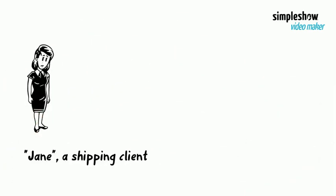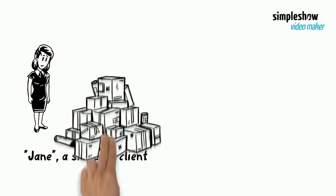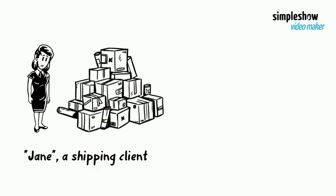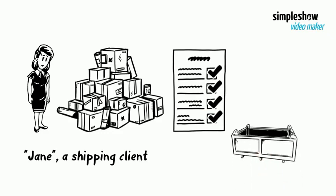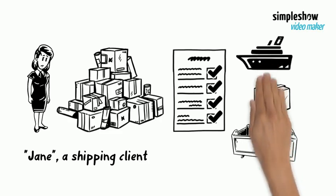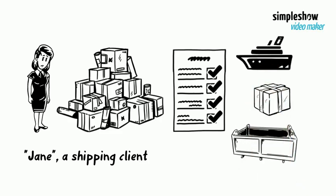One day a client named Jane comes to the dock. Jane urgently needs to ship many different packages. How to do that quickly? Docky gets a shipping instruction list. It lists everything on how to ship Jane's stuff in a container: what type of container, how to upload her stuff to the container, and how to ship the container on the boat, etc.